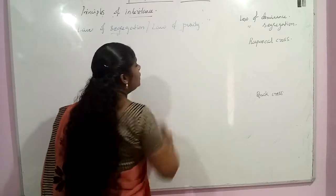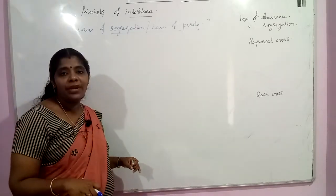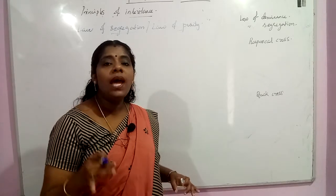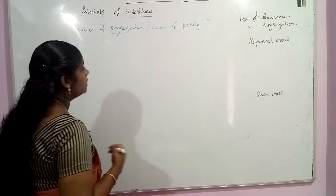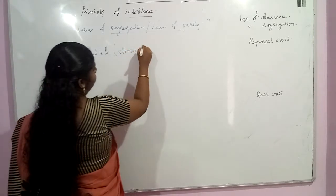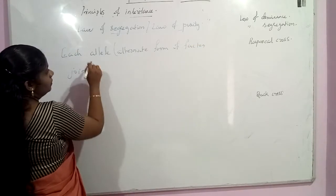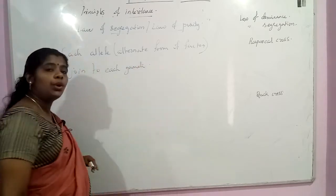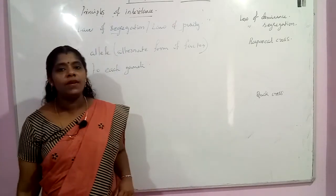The segregation of two alternate forms of a factor occurs, and each gamete will have only one allele of a particular gene — never more than one. This is called the law of segregation, also known as the law of purity of gametes.